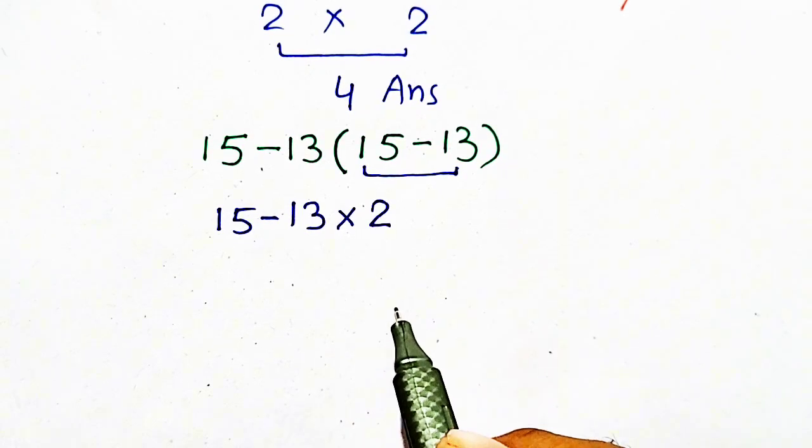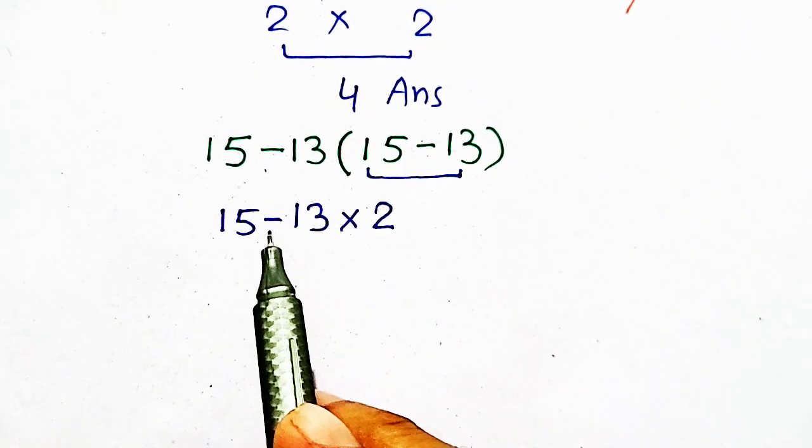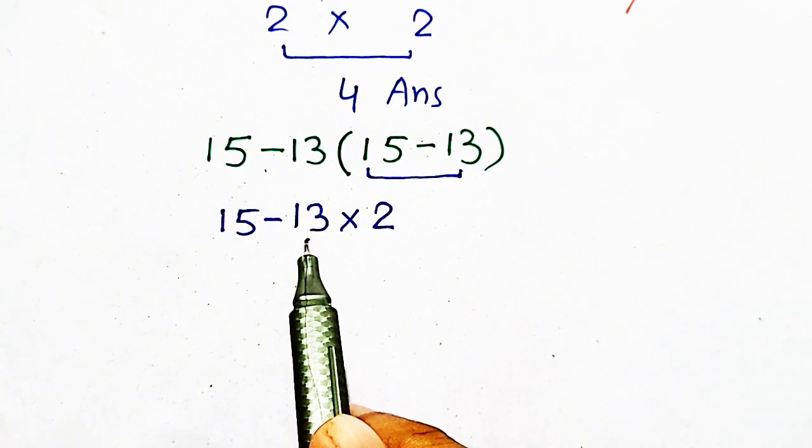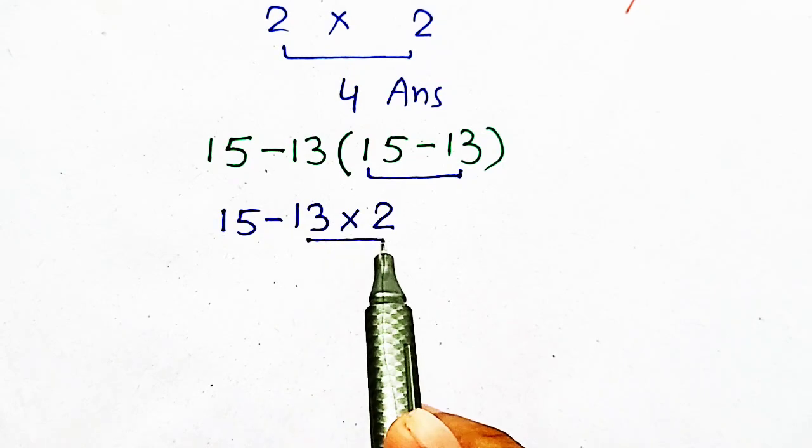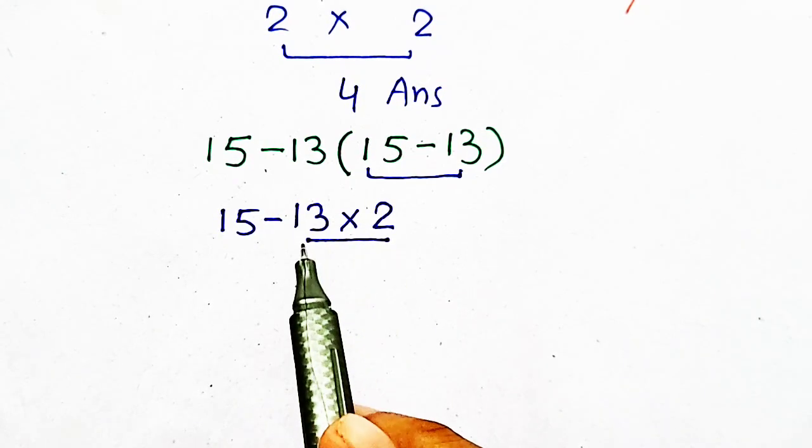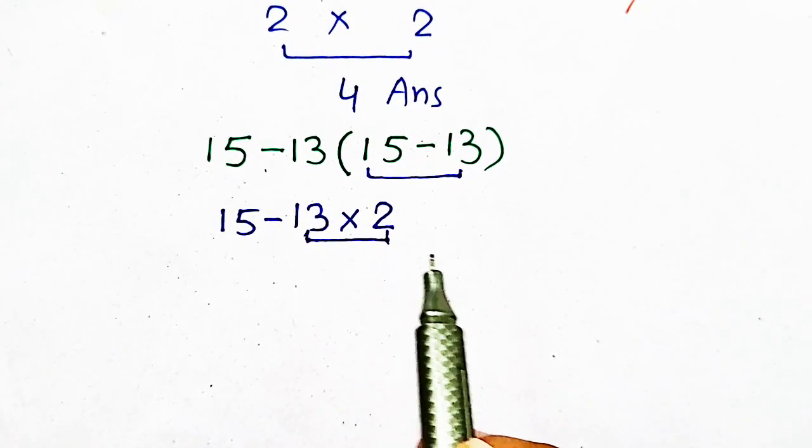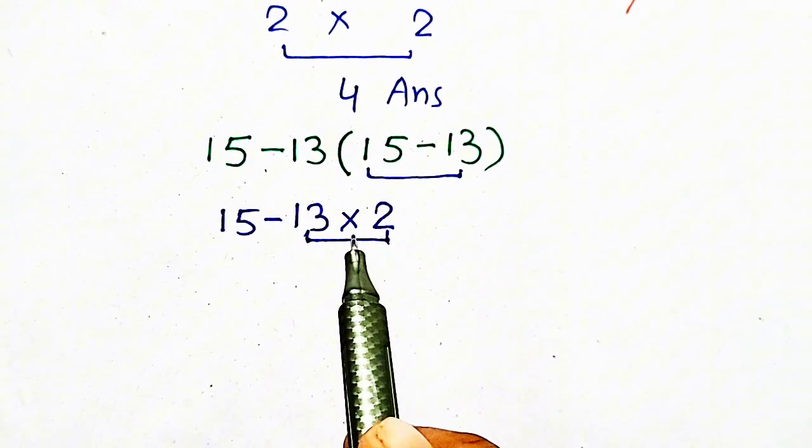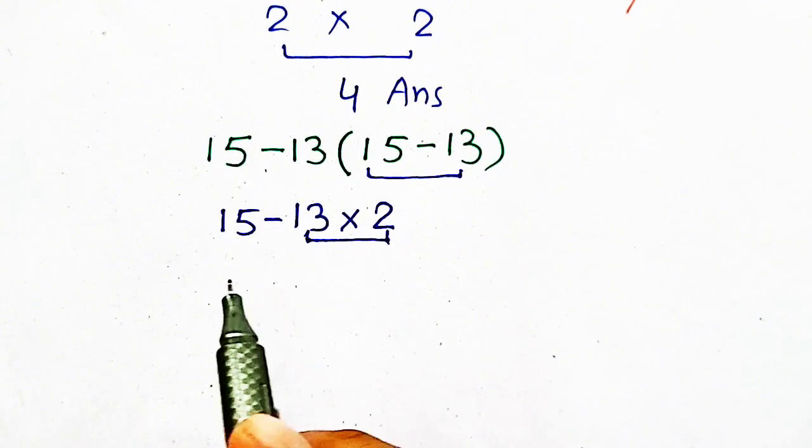Now, we have to do basic operation. First one is subtraction and second one is multiplication. So, we have to prefer this multiplication because, according to PEMDAS or BODMAS or DMAS, we have to solve multiplication first.